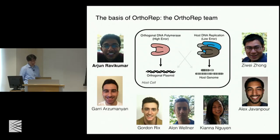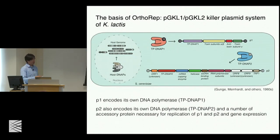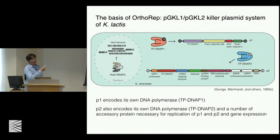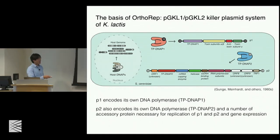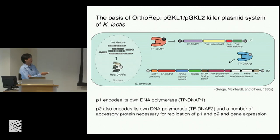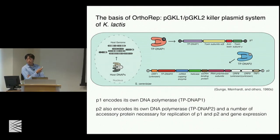Now let me tell you how OrthoREP was set up. Arjun Ravi Kumar led this project — he started in the lab when I did in 2013 and has really brought this to fruition. The basis of OrthoREP, in terms of the yeast basis: we were looking for a natural system that already could have some of the properties we were interested in. After searching through a lot of replication systems, we found this interesting killer plasmid system from a certain strain of yeast called K. lactis — milk yeast. In this plasmid system, described in the 80s, you find these two cytoplasmic linear pieces of DNA; if you look at what's on them, you find that DNA polymerases are encoded, along with a number of other proteins.